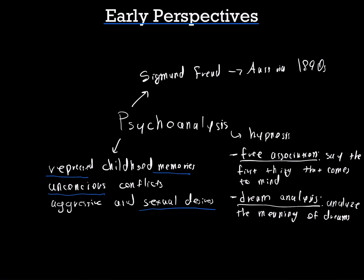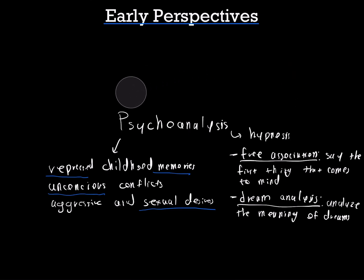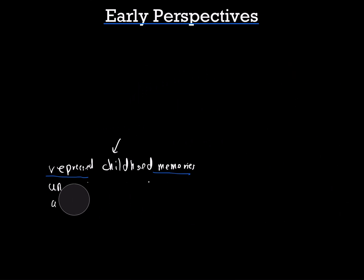To be clear, none of these perspectives are really used today because they were really the first ones — the start of the whole field of psychology. However, there is a modern version of psychoanalysis called psychodynamic, which you'll learn about in AP psychology. And functionalism sort of morphed into evolutionary psychology. So that's all you need to know about the early perspectives of psychology. Thank you for watching.